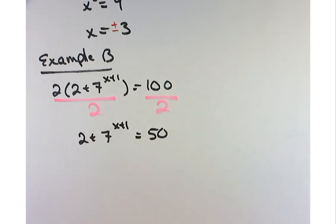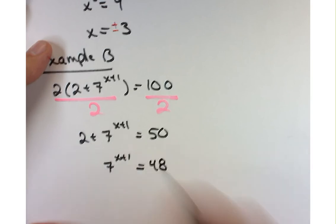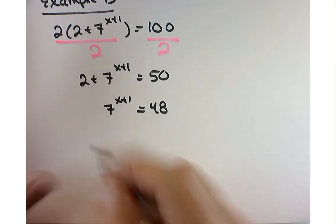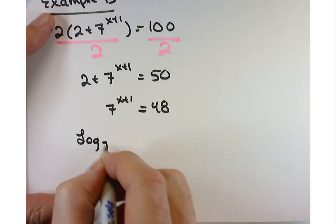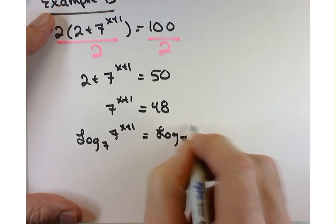Then subtract 2 from both sides. Now, what can I do to finish solving this? Take the log on both sides. What base logarithm should I use? 7. So log base 7 of 7 to the x plus 1 equals log base 7 of 48. What happens on the left-hand side? It becomes x plus 1 equals log base 7 of 48, or x equals negative 1 plus log base 7 of 48. That's your final answer.